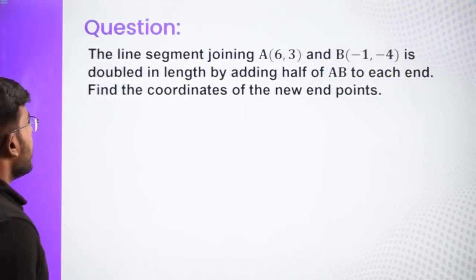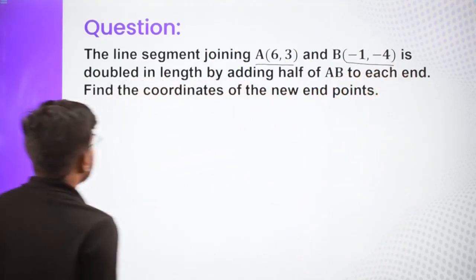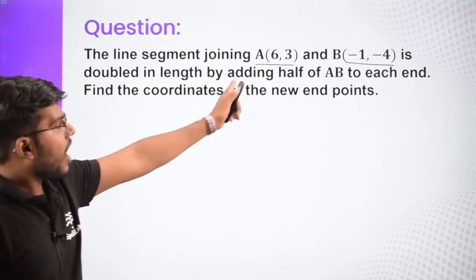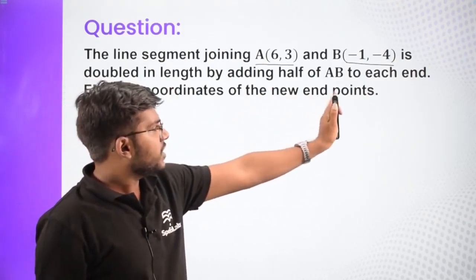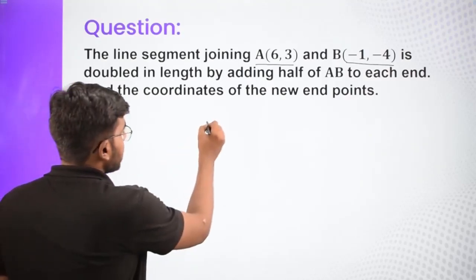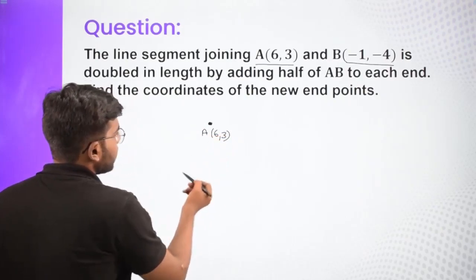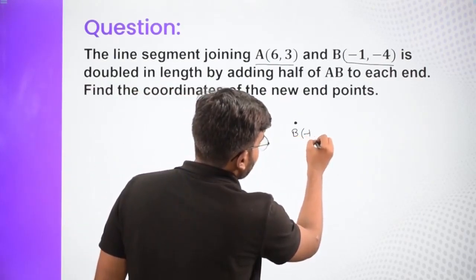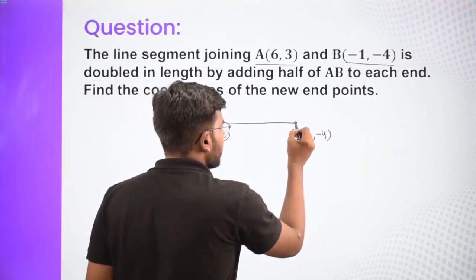Now let's see some questions. First question: the line segment joining A(6, 3) and B(−1, −4) is doubled in length by adding half of AB to each end. Find the coordinates of the new endpoints. So we have point A with coordinates (6, 3) and point B with coordinates (−1, −4). The line is doubled by extending half the length of AB beyond each end, creating new endpoints P and Q.